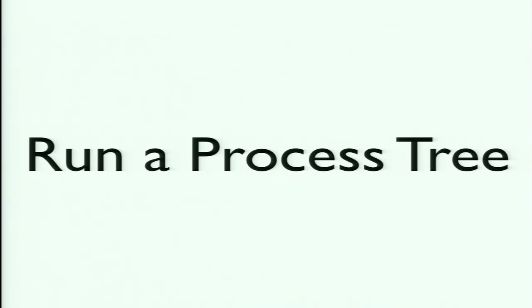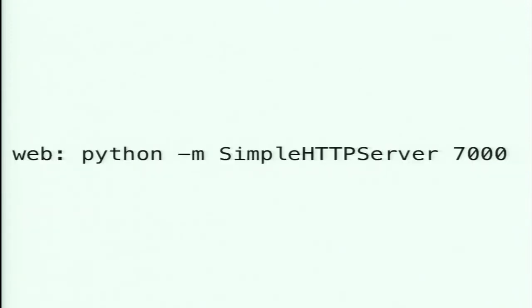Typically you want to run a process tree. Very few things are a single process — unless you're running .NET or Java, it probably has several things. Since I was using the Procfile earlier, I went with that again. This Procfile defines a process named 'web' — this is the smallest web server I could figure out how to make, a basic HTTP server included in the Python standard library, listening on port 7000.